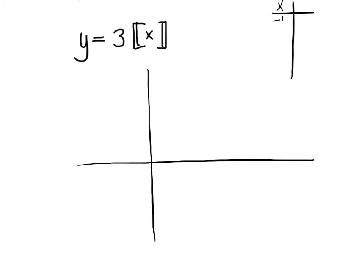So x would be like negative 1, 0, 1, 2. y is going to be negative 3, 0, 3, and 6.